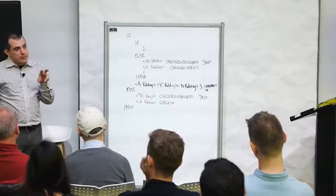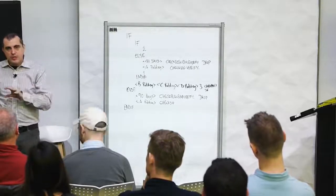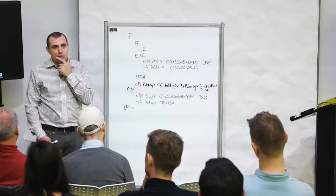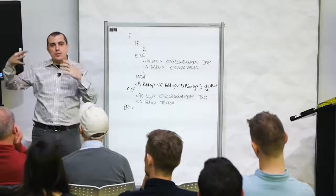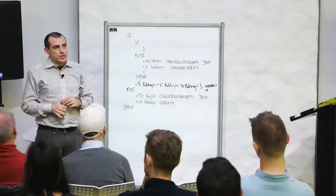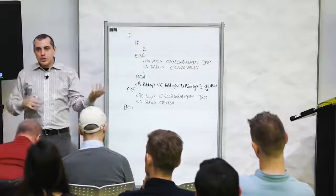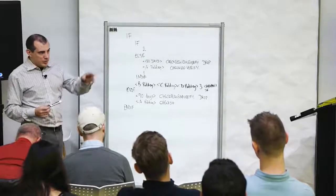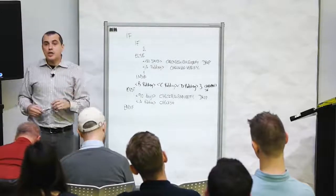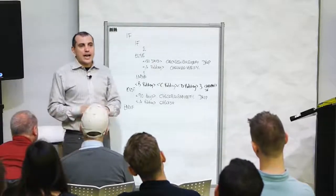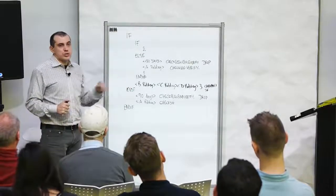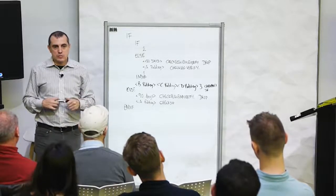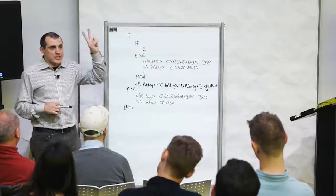Even within Bitcoin scripts, even though it is not Turing-complete, even though it is a very simple stack-based language, you can introduce quite a bit of complexity. If you see some of the Lightning Network scripts and think about all of the game-theoretical aspects of who can operate at which time frame, what can they do — it gets rather complicated to think about all the scenarios.